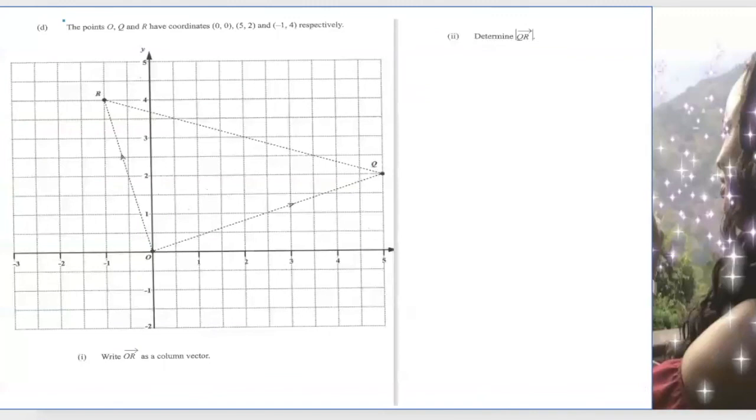The point O, Q, and R have coordinates. O is 0, 0, Q is 5, 2, and R is negative 1, 4. Now this says write OR as a column vector. So OR will be just negative 1, 4 as a column. So negative 1 and 4. That's it.